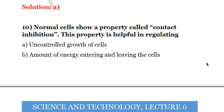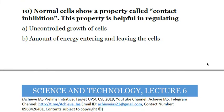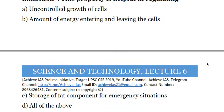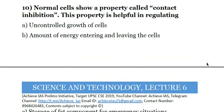Next question: normal cells show a property called contact inhibition. This property is helpful in regulating — A. uncontrolled growth of cells, B. amount of energy entering and leaving cells, C. storage of fat components for emergency situations, D. all of the above. Contact inhibition controls the uncontrolled growth of cells. When cells come in close contact with each other, they have a tendency to multiply, but contact inhibition helps control that. In cancer patients, there is uncontrolled growth of cells which develops into a tumor, so this is essentially an anti-cancer property. The answer is A.